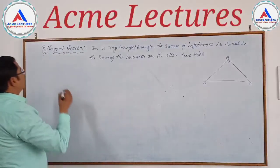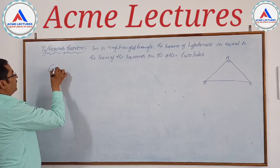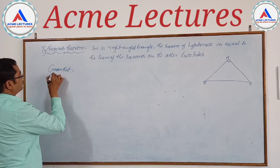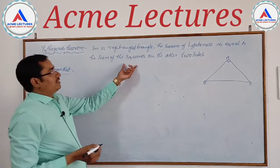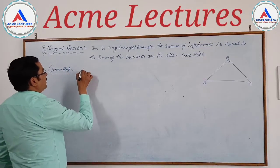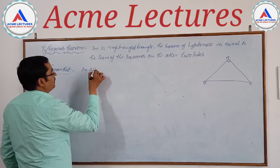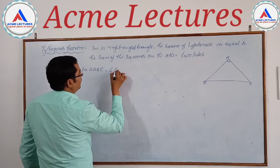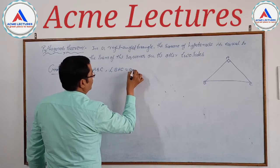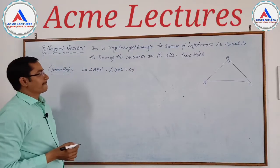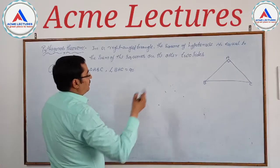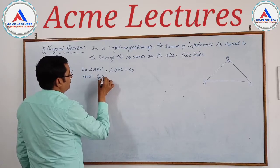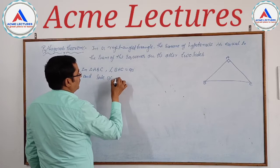Now we have to prove it. First we will write the given statements. Given: In triangle ABC, angle BAC is equal to 90 degrees, and side BC is the hypotenuse.